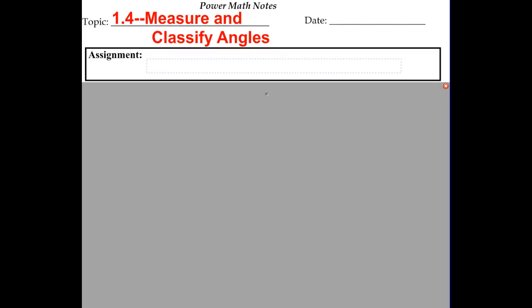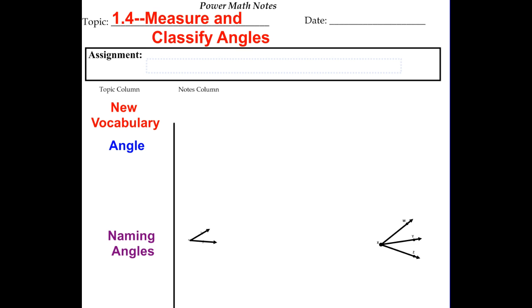We're going to talk about section 1.4 from geometry: measure and classify angles. An angle is an object made from two rays that share a common endpoint but go in different directions.